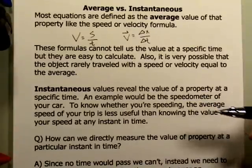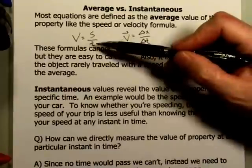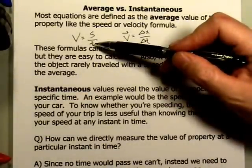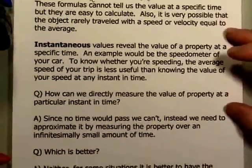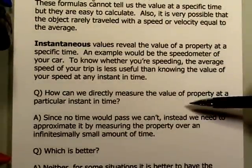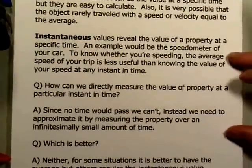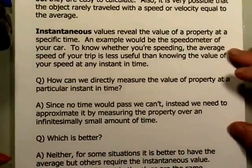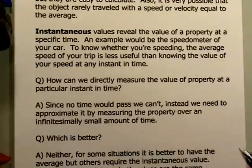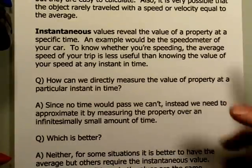That brings up a pretty obvious question: how do you figure out how fast you're moving at a particular instant in time? At a particular instant, no time would pass — so when you think about calculating your velocity, how can you do it if no time has passed? How can you get the instantaneous value using a formula designed to give you the average value? The reality is that you really cannot measure the instantaneous speed — in fact, it's impossible to measure directly, because in order to calculate speed, time has to pass.